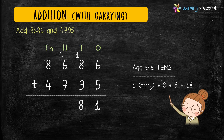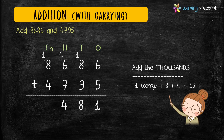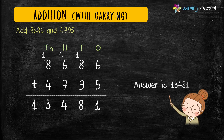Next add the digits at hundreds place: 1 carry plus 6 plus 7 equals 14. Carry 1 to the thousands place and 4 comes in the answer. And in the end, add the digits at thousands place: 1 carry plus 8 plus 4 equals 13. So our answer is 13481.